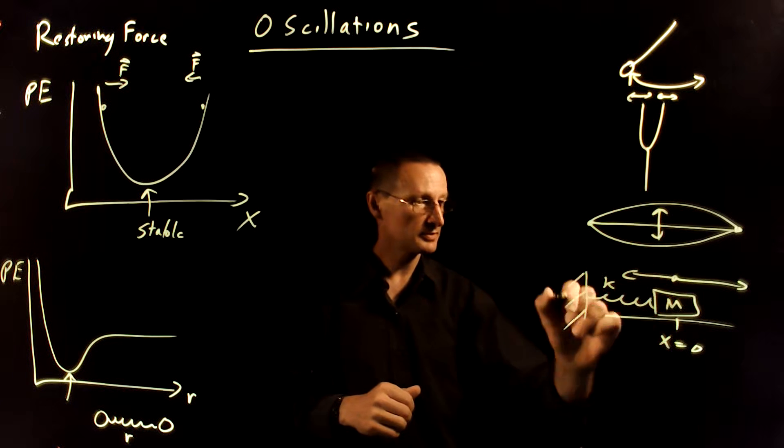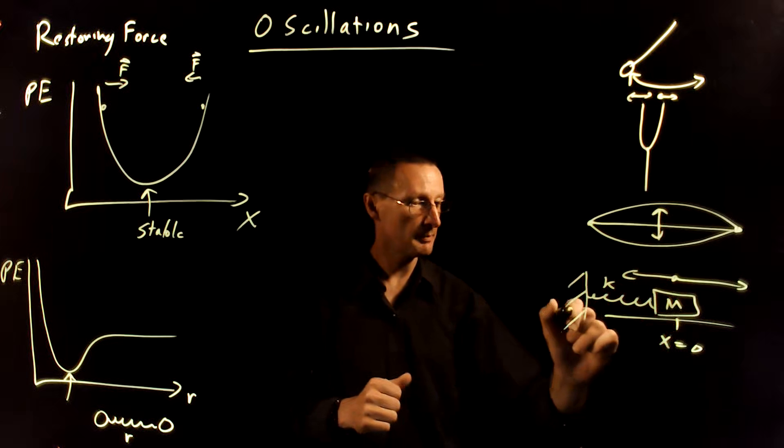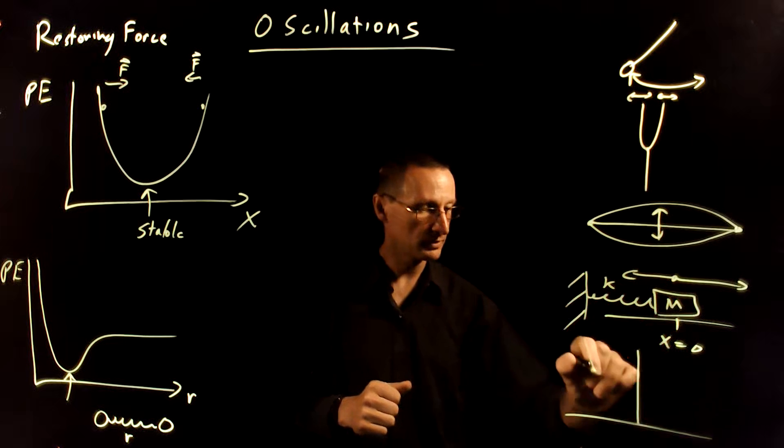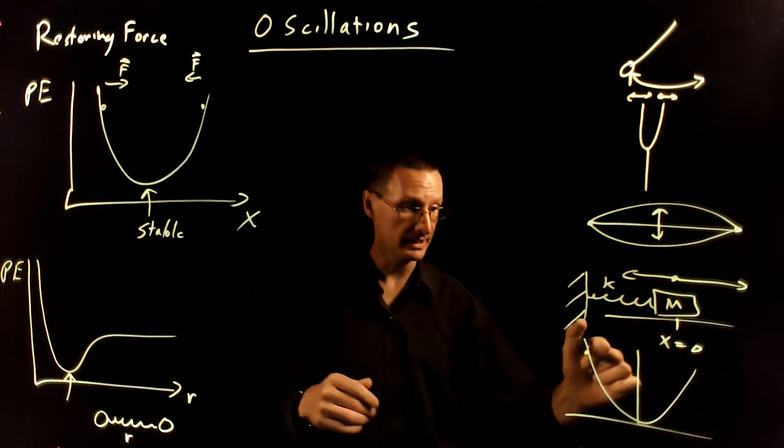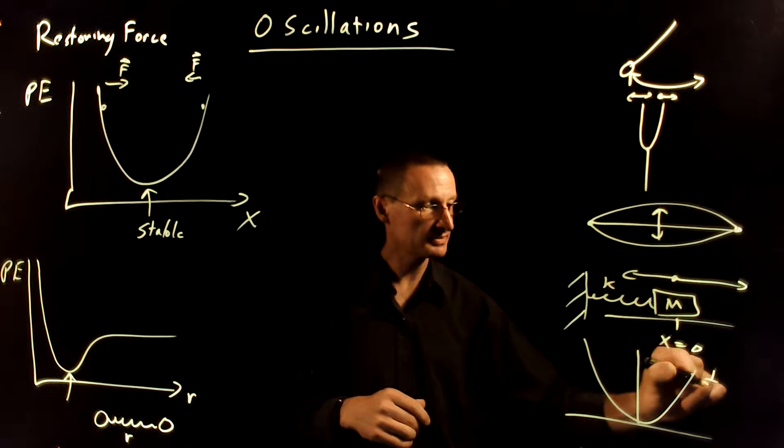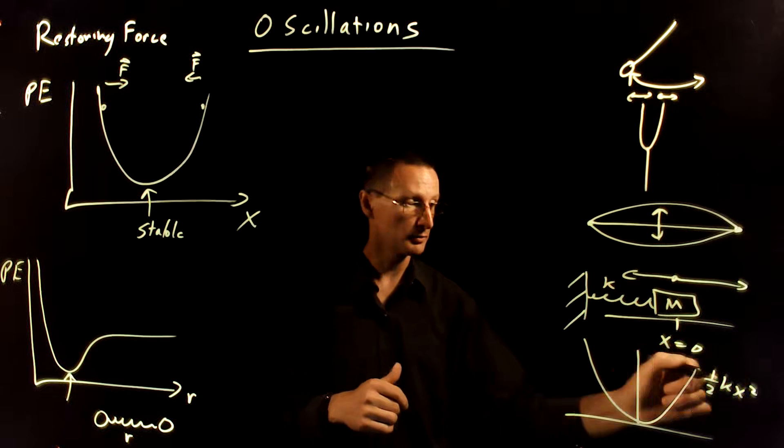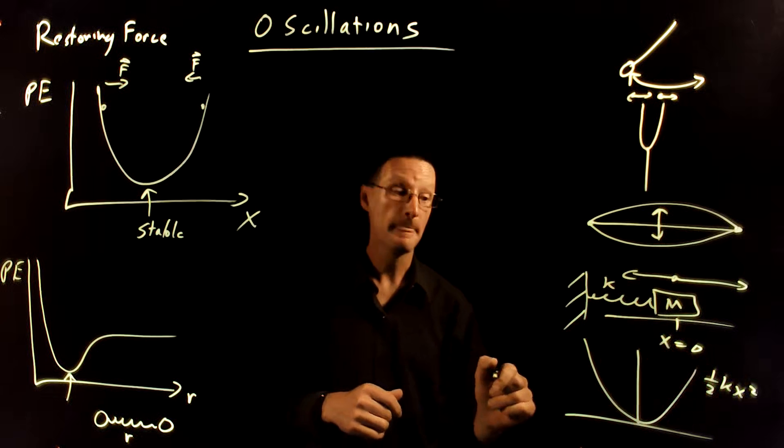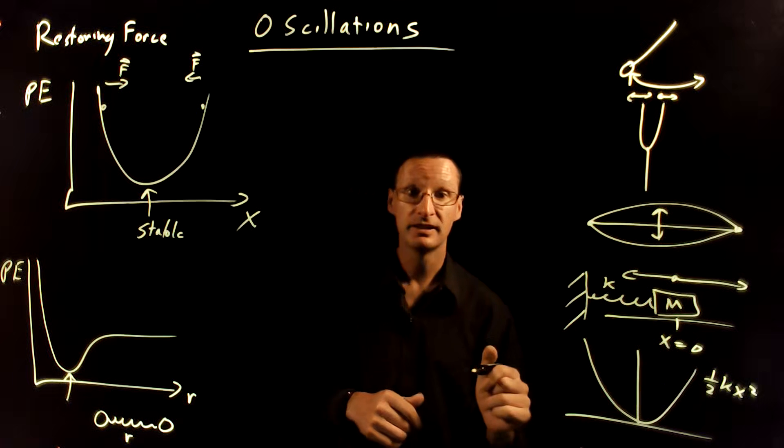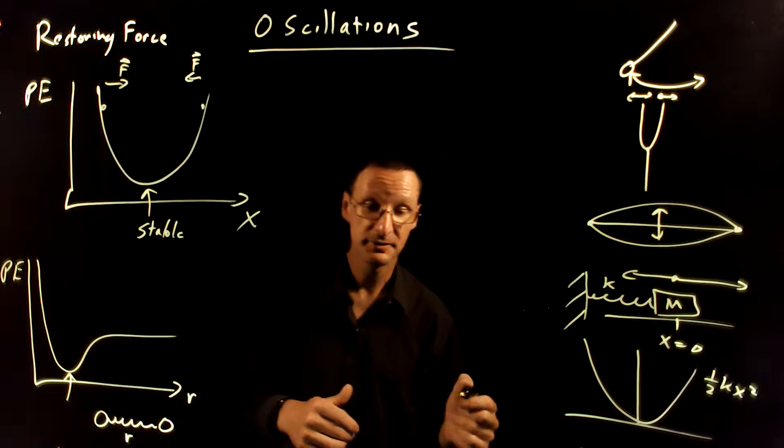Remember that in this situation with the spring and the mass, it has a potential energy function that looks like this. Again, looks like a valley. And that's because that potential energy function is one half K X squared. So you'll recall that X squared gives you a parabola, which is a nice valley shaped potential energy function.